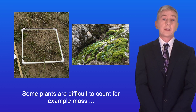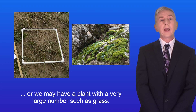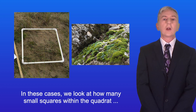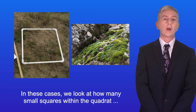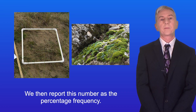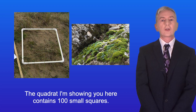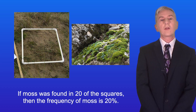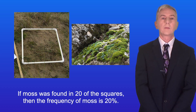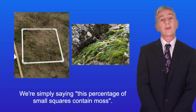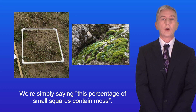Some plants are difficult to count, for example moss, or we may have a plant with a very large number, such as grass. In these cases, we look at how many small squares within the quadrat contain the plant and report this number as the percentage frequency. The quadrat shown here contains 100 small squares. If moss was found in 20 of the squares, then the frequency of moss is 20%. We're simply saying this percentage of small squares contain moss.